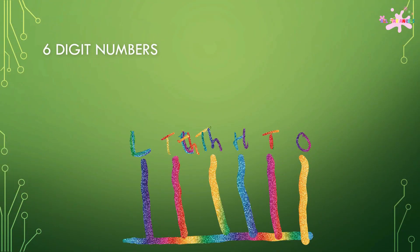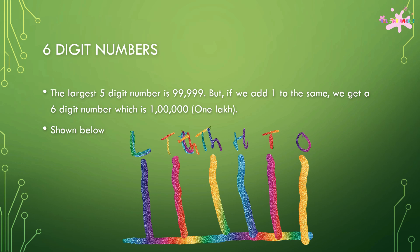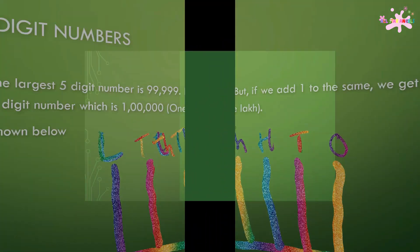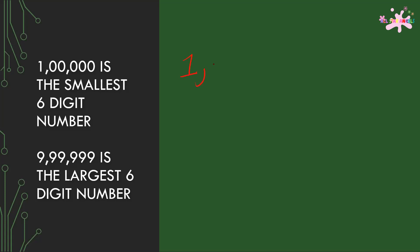6-digit numbers. The largest 5-digit number is 99,999. But if we add one to the same, we get a 6-digit number which is 1,00,000, as shown below. 1,00,000 is the smallest 6-digit number, and 9,99,999 is the largest 6-digit number.